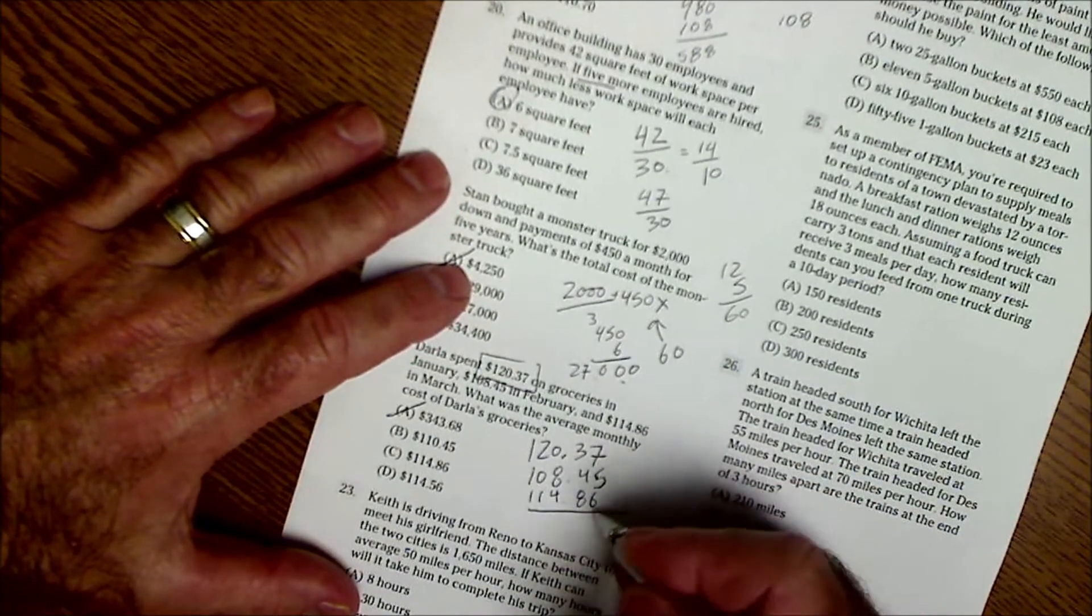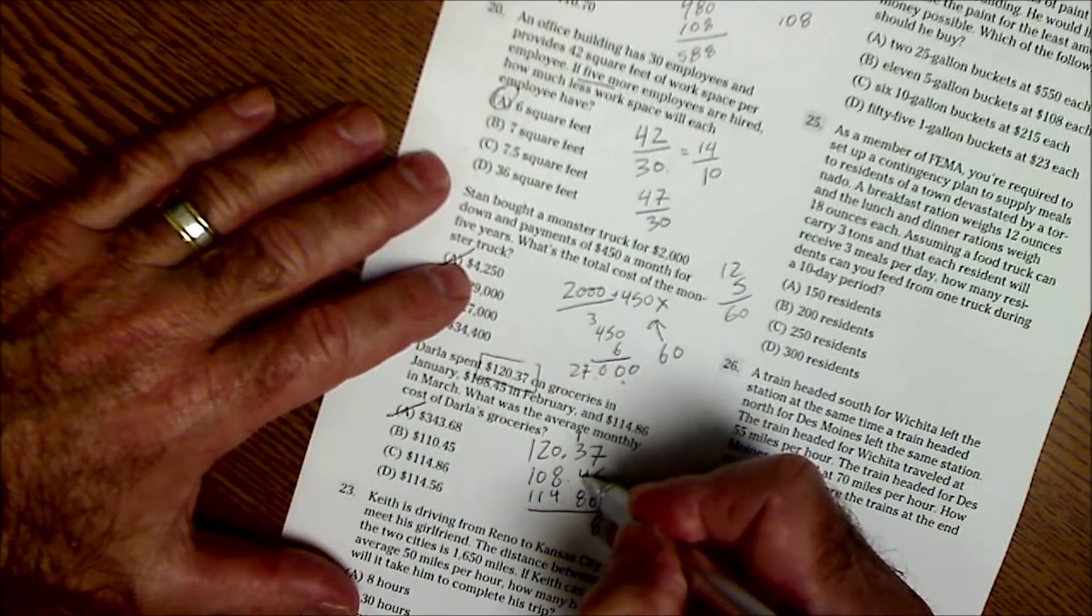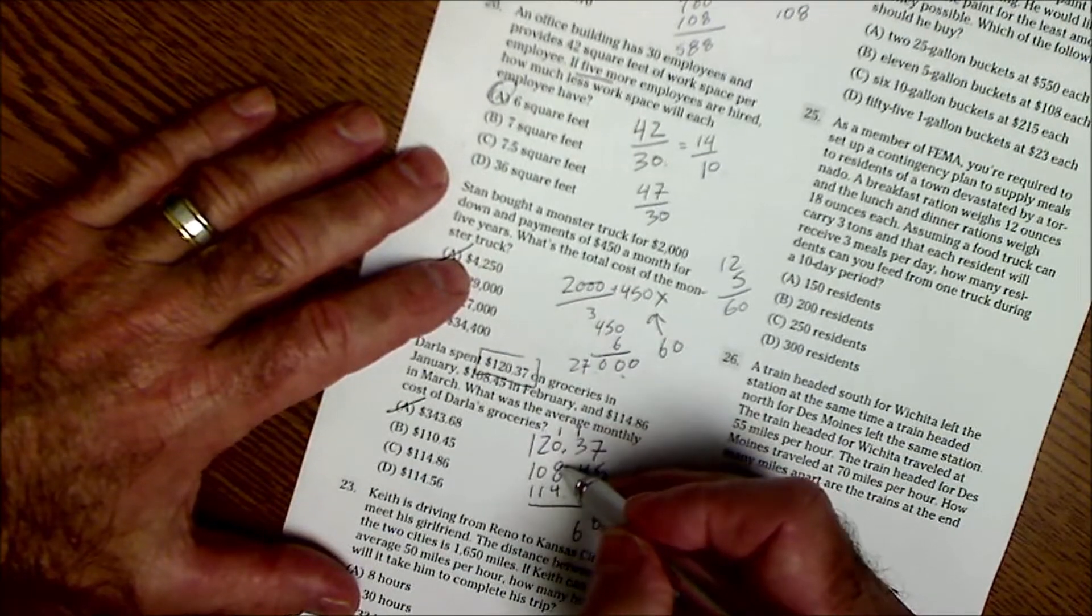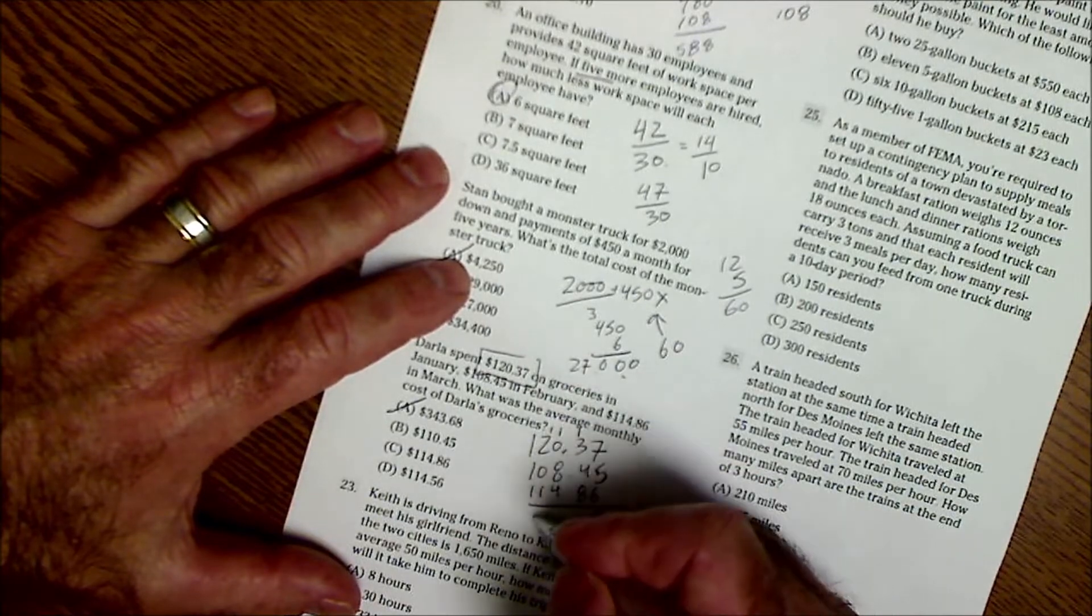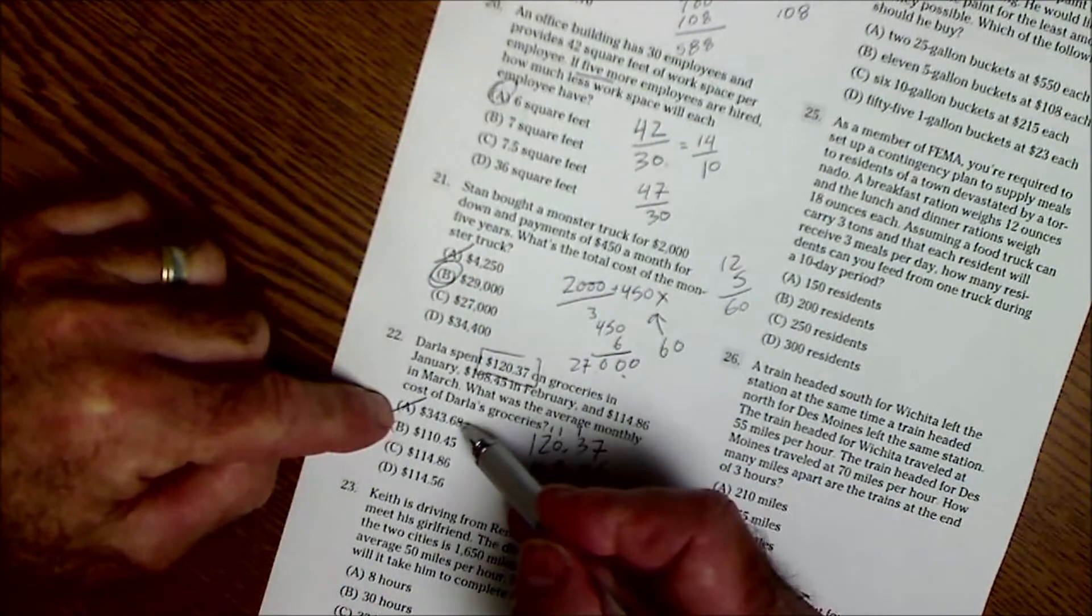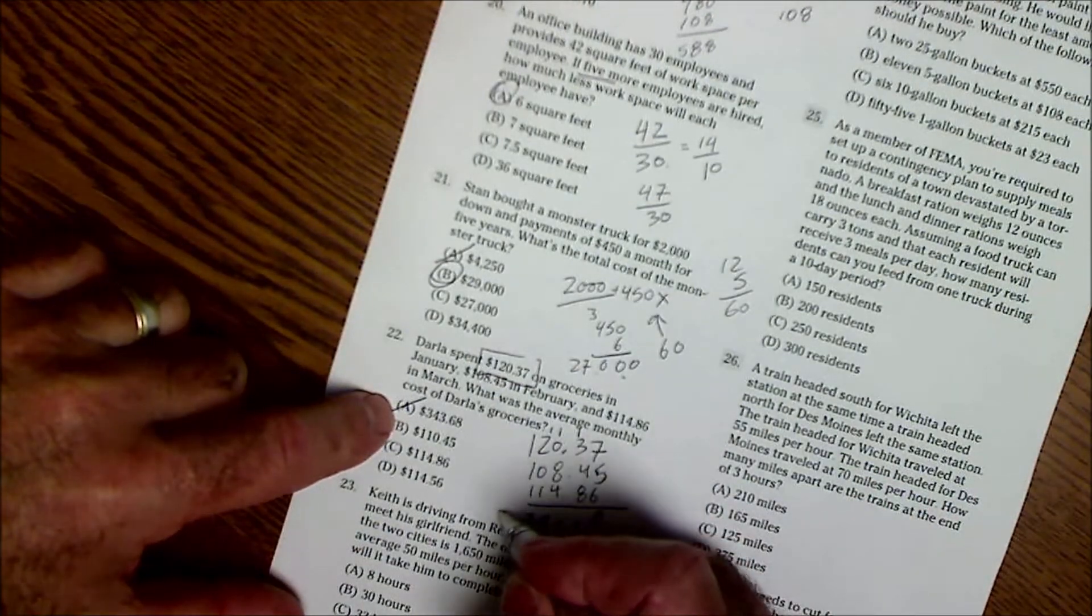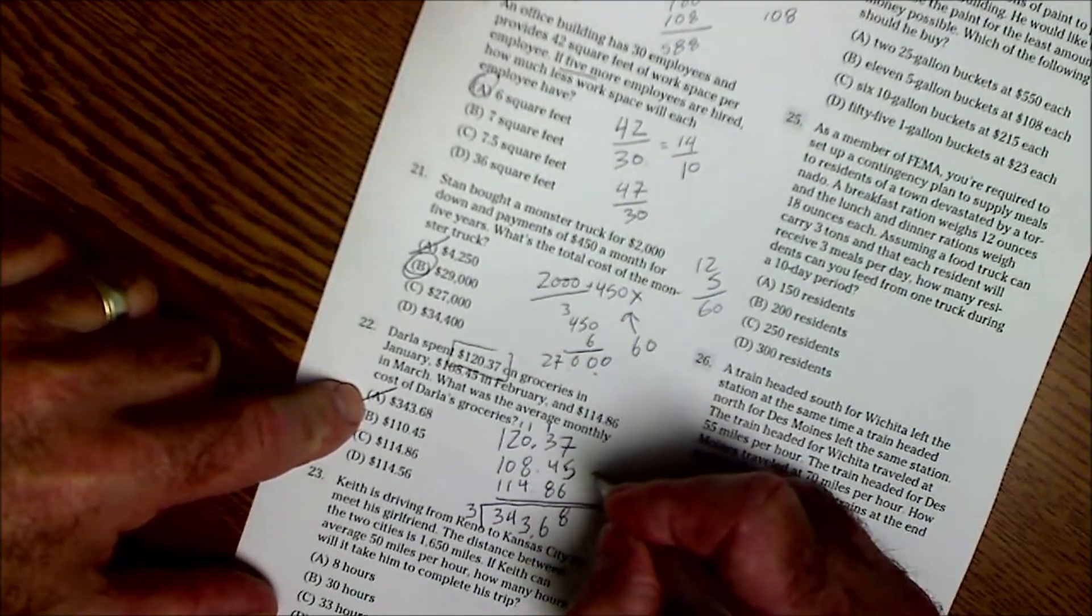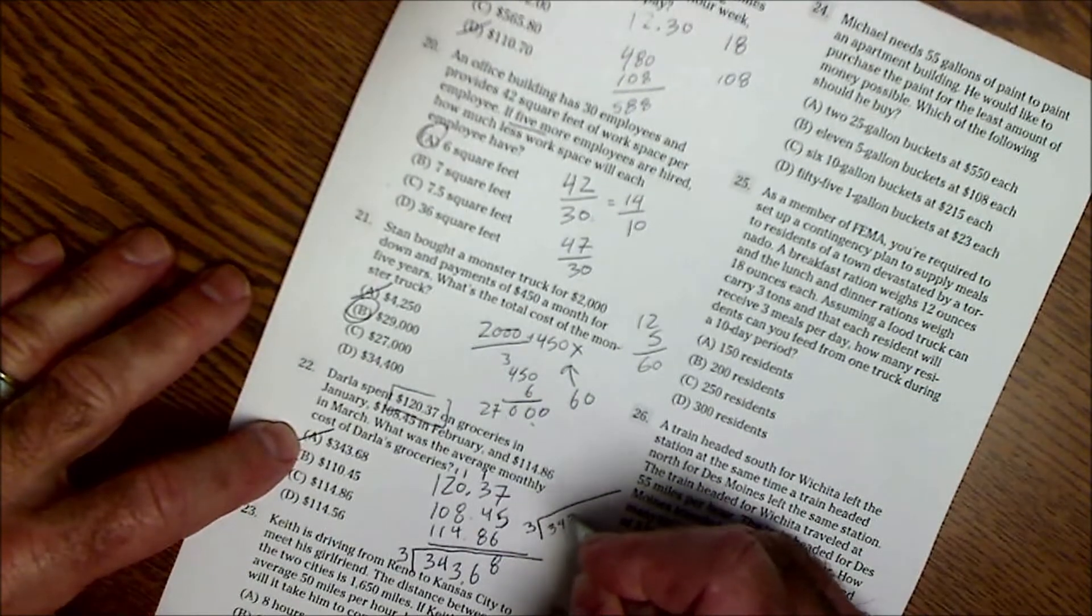Because these are so close, I'm going to actually have to do all this. 7 and 5 is 12. 12 and 6 is 18. Carry the 1. 4 and 4, 8, 16. Carry the 1. 9, 13. Carry the 1. 3, 4. And then 343, 68.